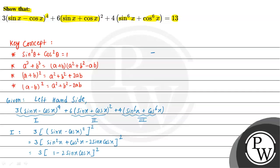We can expand this further. Applying (a minus b)² again to (1 minus 2sinx·cosx)², we get 3 into (1 plus 4sin²x·cos²x minus 4sinx·cosx). So the first part simplifies to 3 plus 12sin²x·cos²x minus 12sinx·cosx.